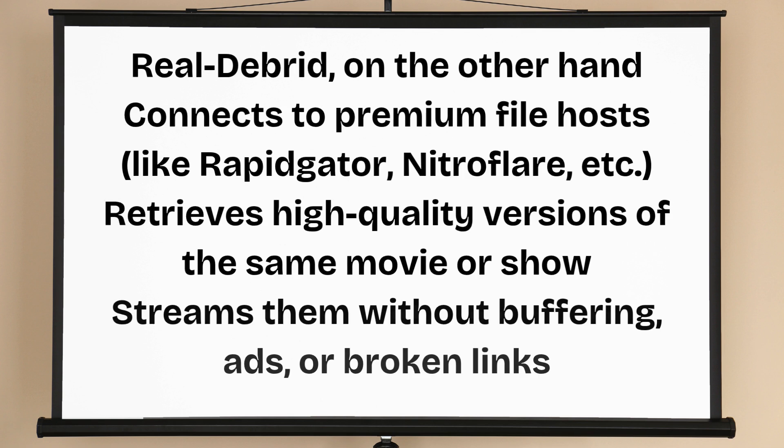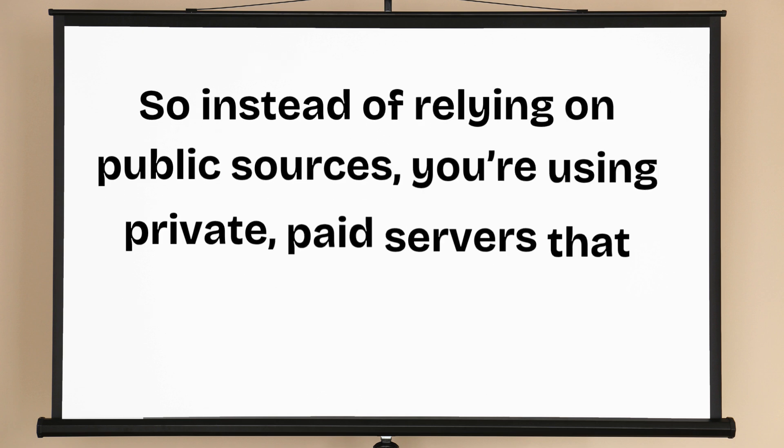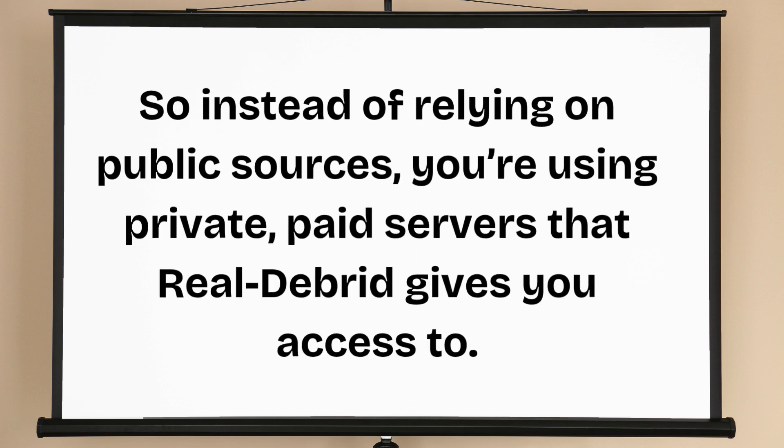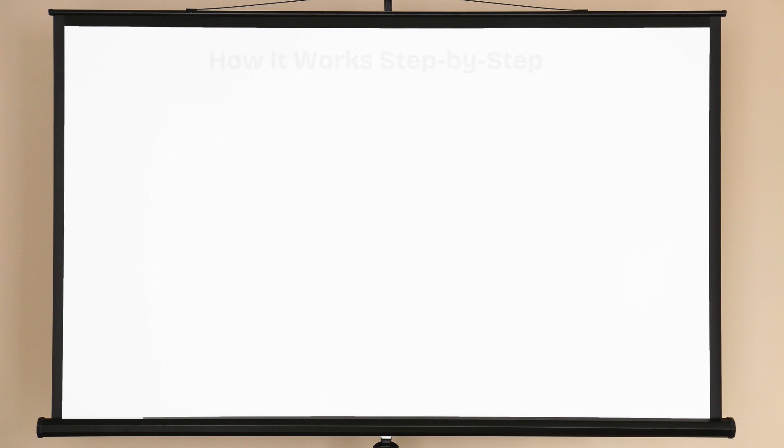Real Debrid, on the other hand, connects to premium file hosts like RapidGator, NitroFlare, etc. It retrieves high-quality versions of the same movie or show and streams them without buffering, ads, or broken links. So instead of relying on public sources, you're using private, paid servers that Real Debrid gives you access to.